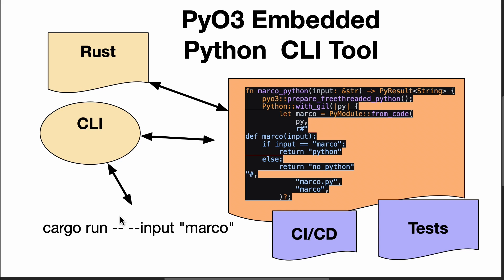The next question that many people working in production environments may want to think about is: what are the next steps that make this a real-world production tool? In my opinion, the first step for most interfaces is to start with a command line interface. With Rust there are many excellent CLI frameworks that allow you to do sophisticated things like binary deployment — one of my favorite ways to deploy a CLI, since you just give someone a binary and they can execute it. This takes over some of the limitations of Python, which cannot do binary deployment as it's a scripting language that requires an interpreter.